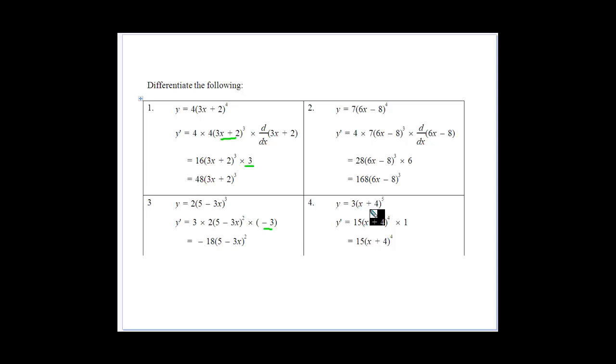Then 3(x + 4) to the power of 5. Bring your 5 down, multiply by the 3, subtract 1 from the power. The derivative of (x + 4) is 1, so we multiply by that. And we get our expression there. Hopefully we get the idea.